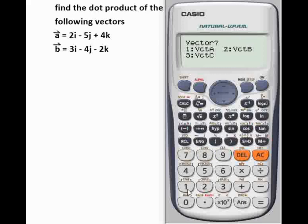Option 1 is vector A. You select option 1 again because our vector has three values: i, j, and k. Now the first value which is for i is 2, you press 2 then equal to. You have the coefficient of j as minus 5, so you have minus 5 equal to. And then the coefficient of k is 4, then equal to.